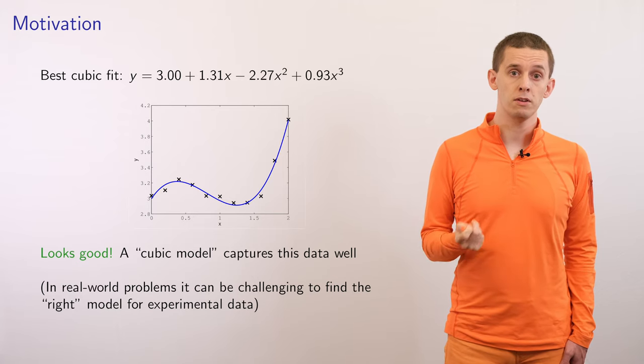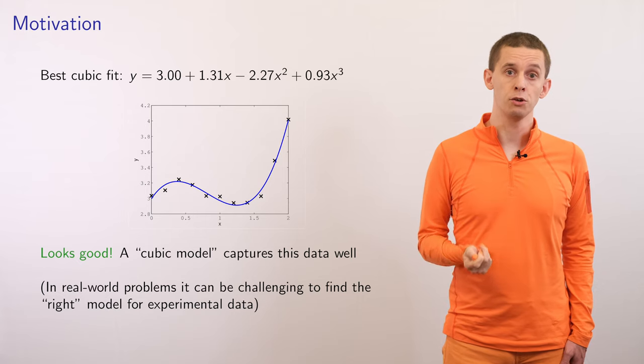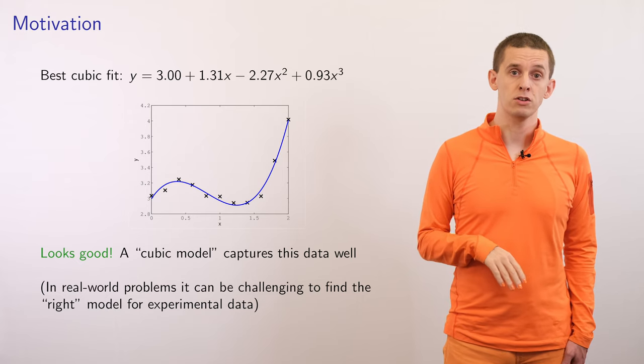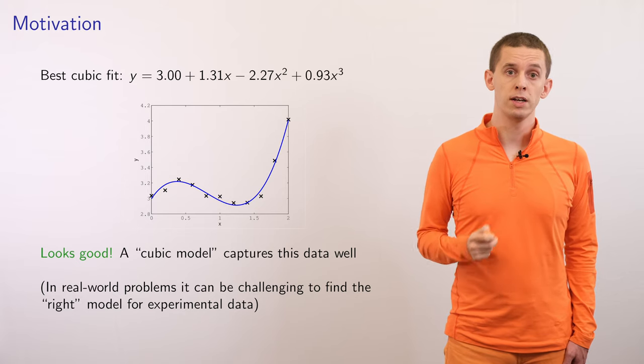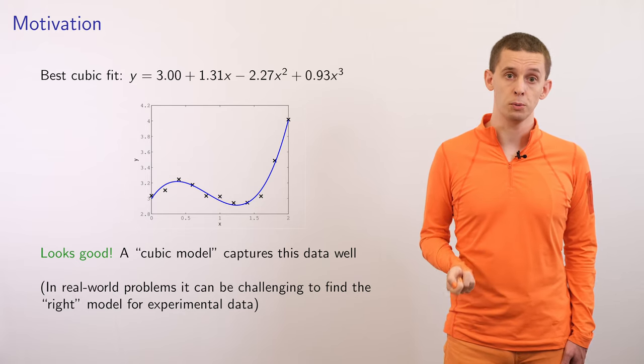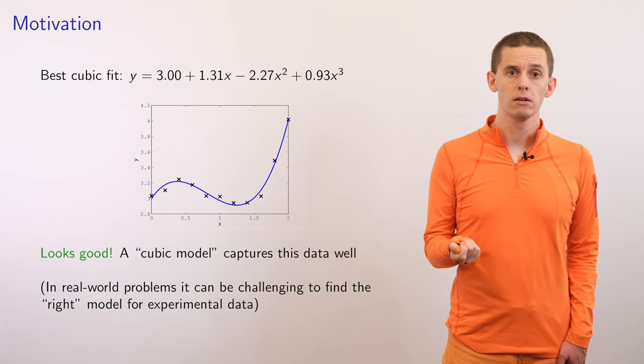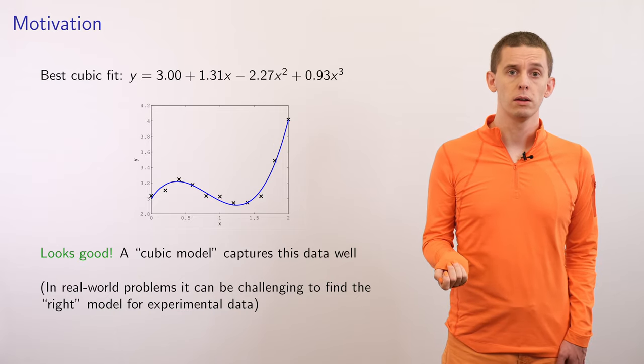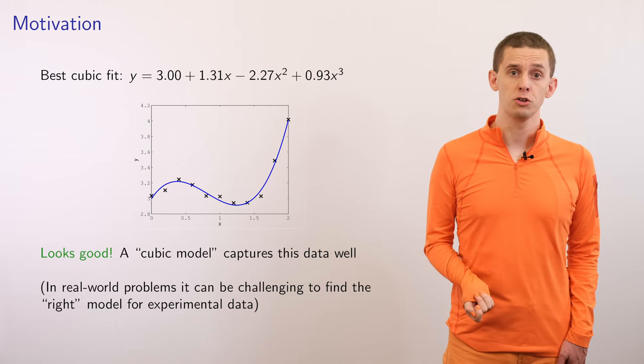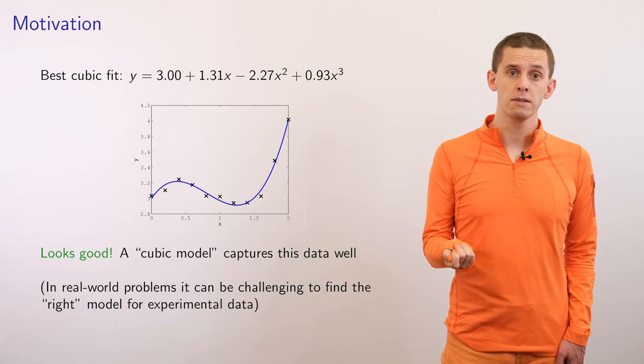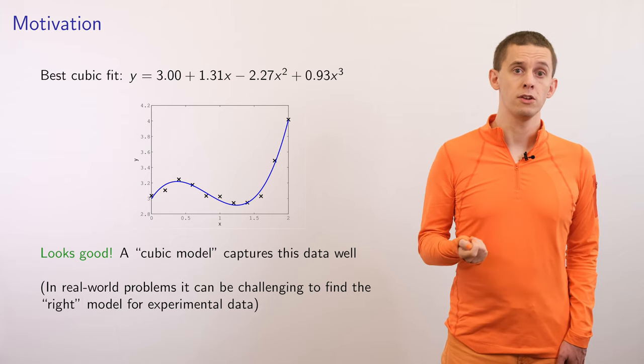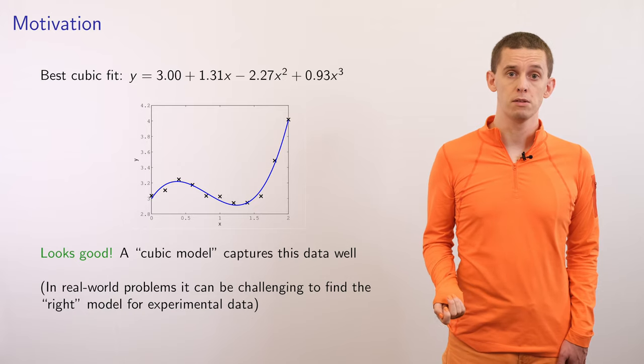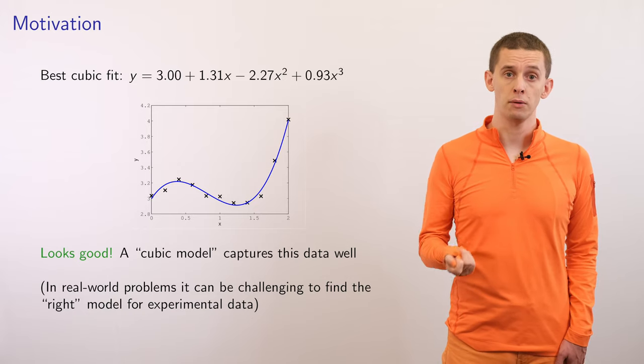If we do this for the data, we really start to get a good fit. We see that it matches the general trends in the data, but it doesn't seem to have any of the undesirable features of the higher order polynomials that we tried. Here, the cubic fits the data well. But for a general data set, it's an interesting question about what fitting model we should choose. This can depend on many things, such as our goals, whether there's noise in the data, and how large the data set is. We'll look at some of these issues throughout this unit.